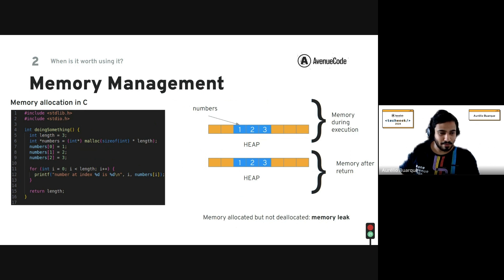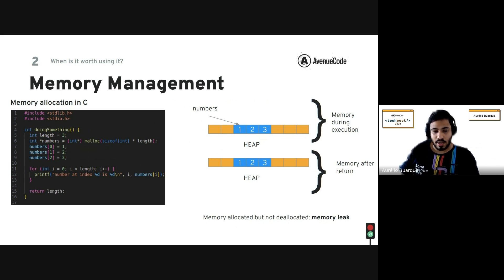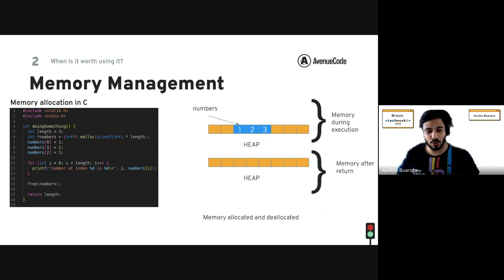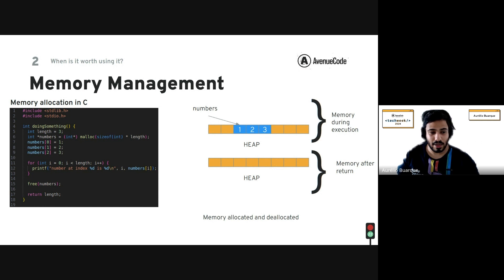In a language without a garbage collector like C, things are different. This code allocates a vector, assigns values, and prints them — but the problem is it doesn't release the allocated memory when the function returns, creating a memory leak. Fortunately, solving this is easy: just free the memory. It's a trade-off — garbage collectors keep us focused on the product, but manual memory management gives you precise control when you need it.